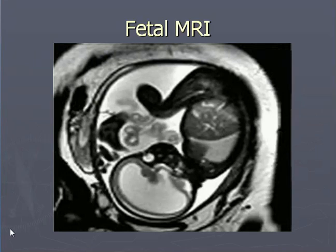Fetal MRI again — one fetus upside down. You can see the brain, ventricles, eyeball, and other fetal structures.